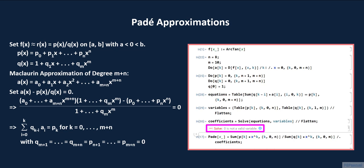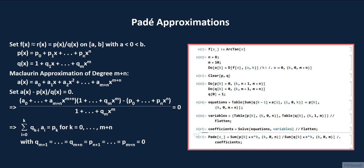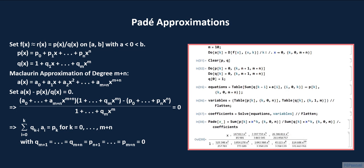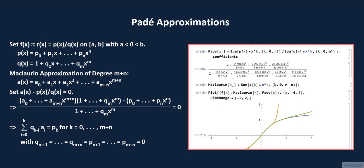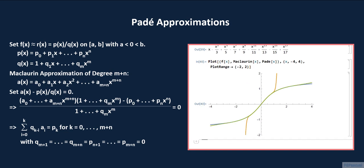We fix this problem by clearing all previous definitions of p and q right before we start defining any p sub k or q sub k. We evaluate the Clear command, then re-evaluate all the subsequent cells. We obtain the Padé approximation and the Maclaurin approximation, and the graphs of the three functions show the Padé approximation providing a better approximation for f of x.